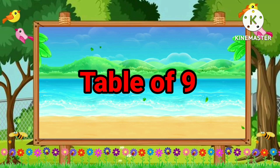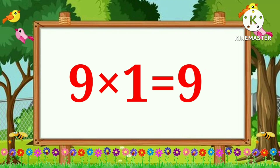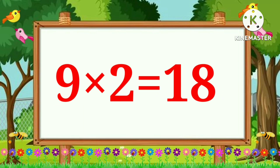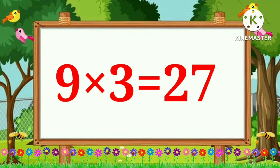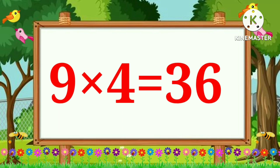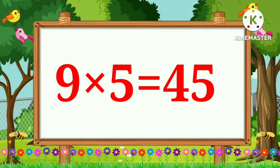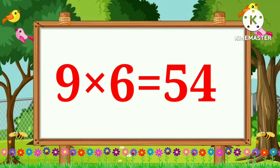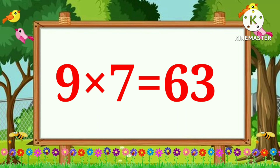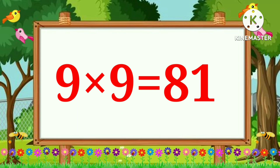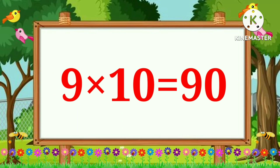Table of Nine. Nine ones are nine. Nine twos are eighteen. Nine threes are twenty-seven. Nine fours are thirty-six. Nine fives are forty-five. Nine sixes are fifty-four. Nine sevens are sixty-three. Nine eights are seventy-two. Nine nines are eighty-one. Nine tens are ninety.